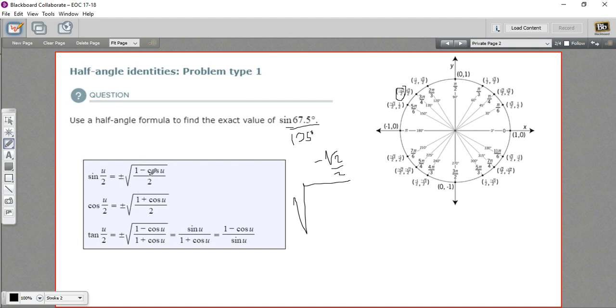Let's fill out the rest of this. We've got 1 minus the cosine of u. So that's 1 minus a negative square root of 2 over 2, and all of that is over 2. Let's do some simplification here.